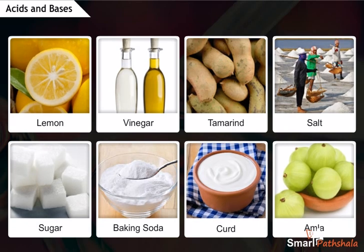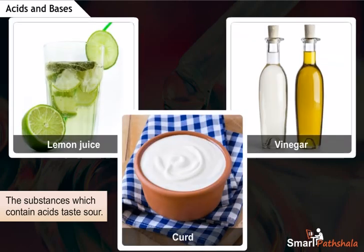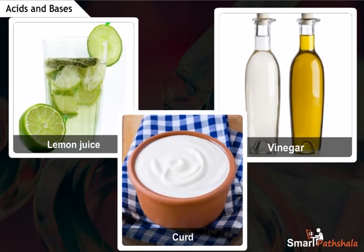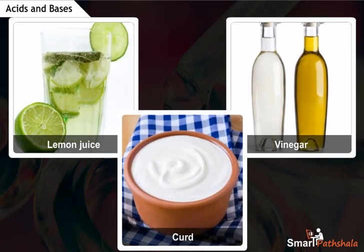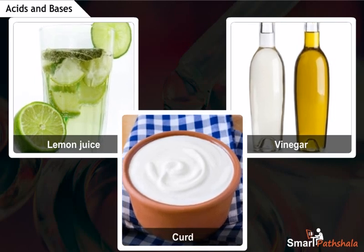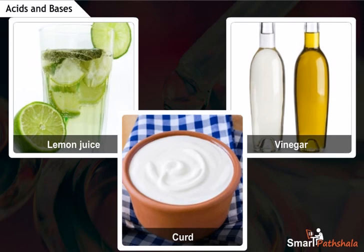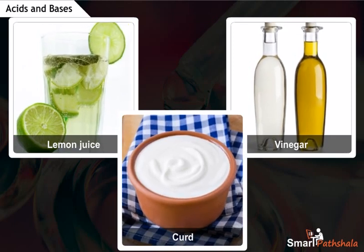Some of these substances taste sour, some taste bitter, some taste sweet and some taste salty. The substances which contain acids taste sour. For example, lemon juice, vinegar, and curd taste sour due to the presence of acids in them. The acids in these substances are natural acids, and the chemical nature of such substances is acidic.